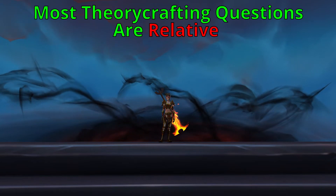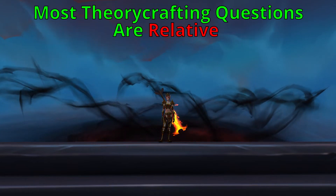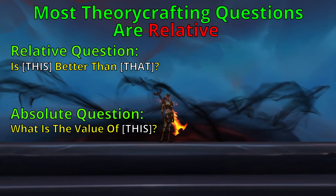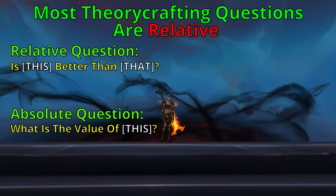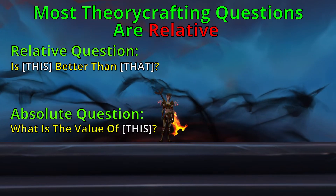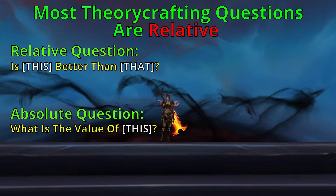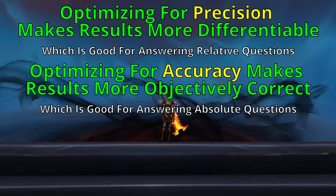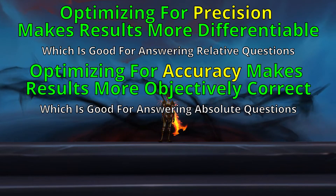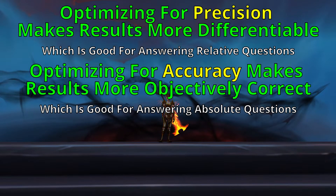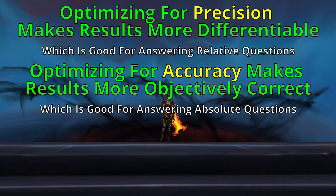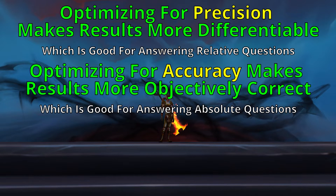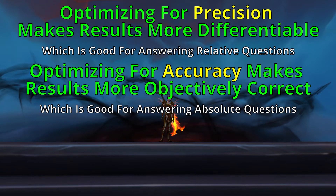Most of the time, the questions that we're trying to answer with theorycrafting are relative questions rather than absolute questions. What I mean by this is that most of the time, what we want to know is: is X better than Y? Is this gear piece I got better than the one I've been using? Is this talent better than this other talent? We typically aren't asking how much DPS does this gear piece provide, or how much DPS does this talent give? Because the outputs from precise modeling are more differentiable, I believe that they are better suited for answering relative questions. This does not mean that you can't answer relative questions by first answering an absolute question, because you definitely can, and in some circumstances it may be the easier way to achieve the results you're looking for.